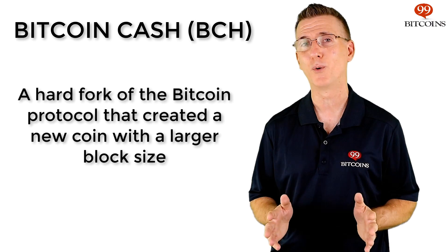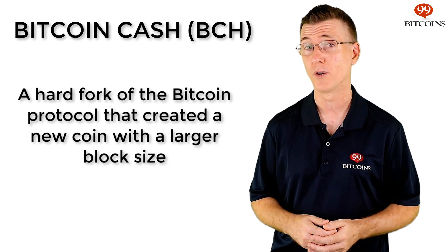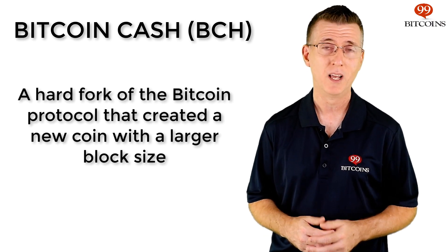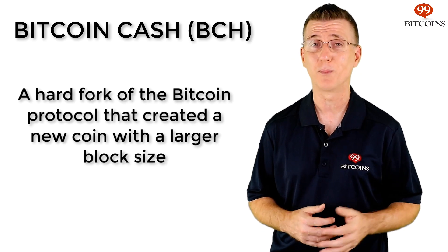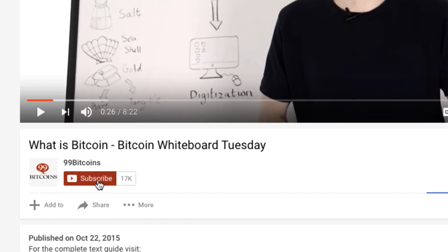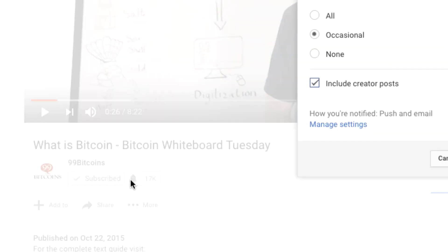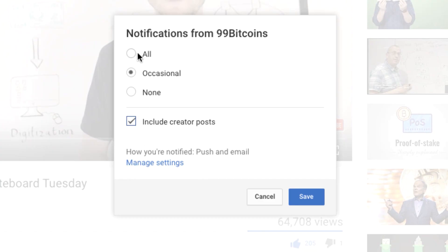That's it for today's episode of Crypto Whiteboard Tuesday. Hopefully by now you understand what Bitcoin Cash is — a hard fork of Bitcoin's protocol that created a new coin with a larger block size. If you still have questions, just leave them in the comments section below. If you're watching on YouTube and enjoy what you've seen, don't forget to hit the like button, subscribe to the channel, and click the bell so you'll be notified as soon as we post a new episode. Thanks for watching. For 99Bitcoins.com, I'm Nate Martin and I'll see you in a bit.